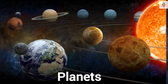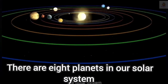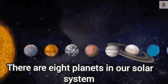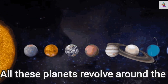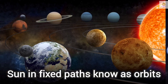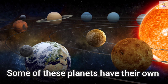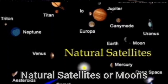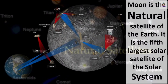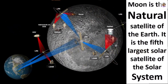Planets. There are 8 planets in our solar system. All these planets revolve around the sun in fixed paths known as orbits. Some of these planets have their own natural satellites and moons. The Moon is the natural satellite of the Earth — it is the fifth largest solar satellite in the solar system.